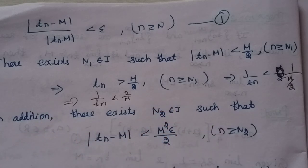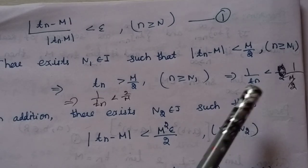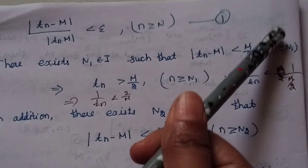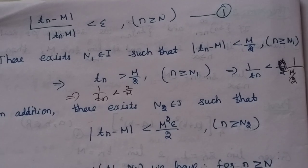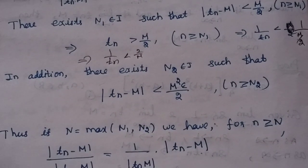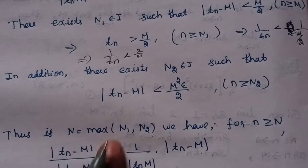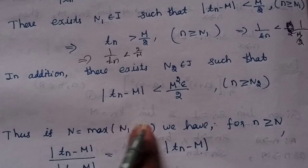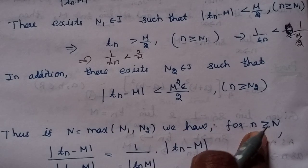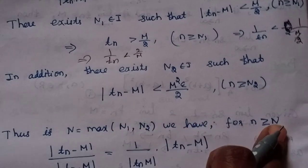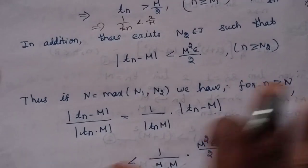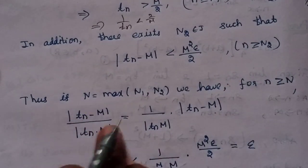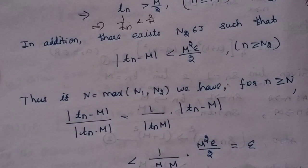If n is greater than or equal to N2, we have established N1 and N2. We go to the maximum: if N equals maximum of capital N1 and capital N2, then for n greater than or equal to capital N, we consider modulus of tn minus m divided by modulus of tn into m.